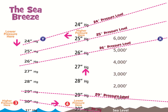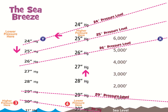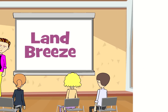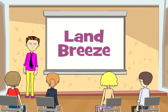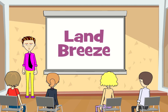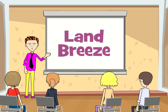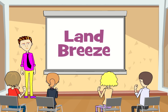Of course, at night the land cools quickly while the ocean retains much of the heat it absorbed during the day. Therefore, air and land switch temperature profiles, with the land being cooler than the ocean, and the circulation reverses — becoming a land breeze instead.